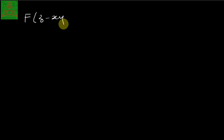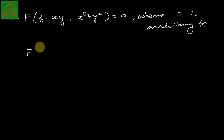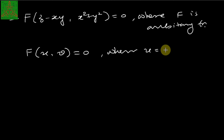There is one more type of example: to find the partial differential equation whose solution is F(z − xy, x² + y²) = 0, where F is an arbitrary function. The objective is to eliminate this arbitrary function and find the corresponding partial differential equation. Let u = z − xy and v = x² + y², so F(u, v) = 0.